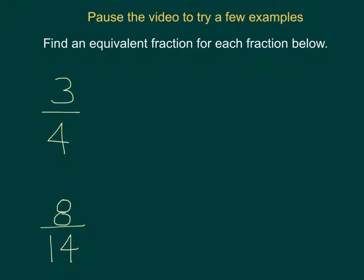Pause the video to try a few examples. Find an equivalent fraction for each fraction below. For the first example, you could have a variety of different answers, but make sure that you're always multiplying the top and bottom by the same number. Let's multiply the top by 3 and the bottom by 3, and this will get us 9 over 12.